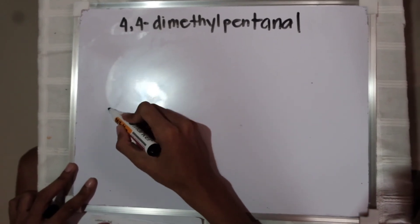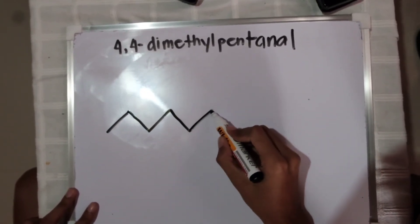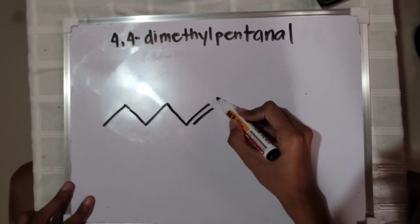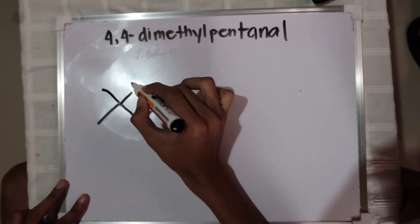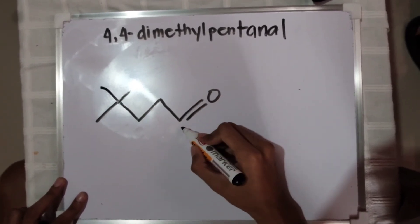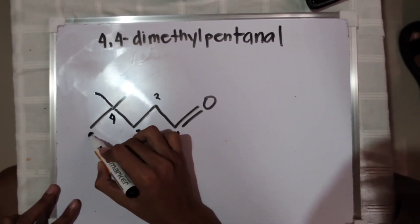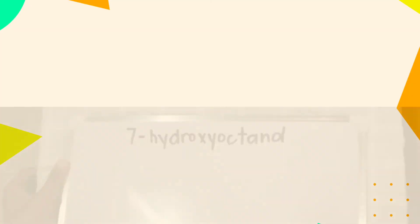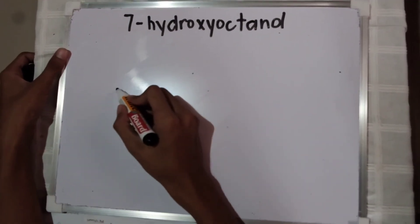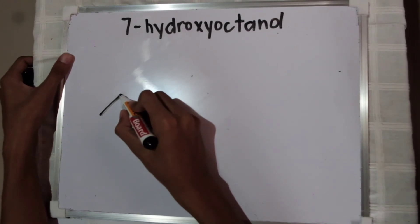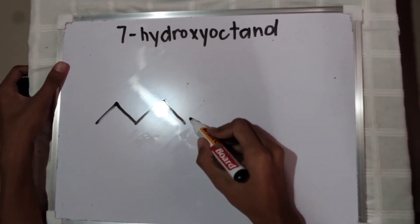Next example: counting the carbons — 1, 2, 3, 4, 5 — this is a pent as well. It's all single bonds except for the double bonded oxygen; all the carbon-carbon bonds are single. That's why we call it pentanal. It is the same molecule except here we have two single carbon chains on carbon 4, so it's 4,4-dimethylpentanal.